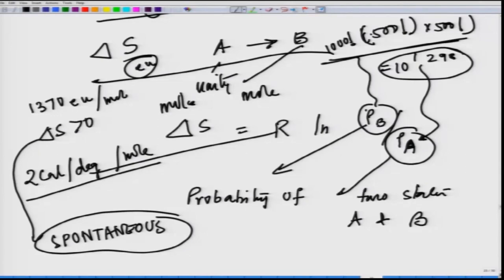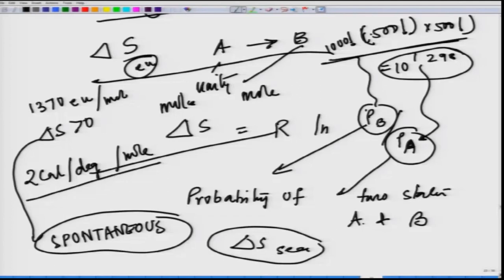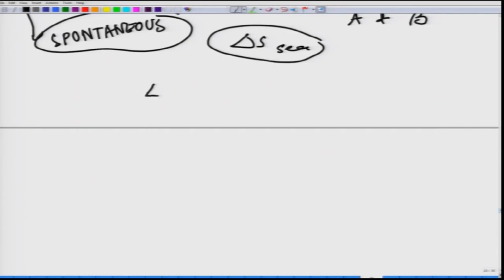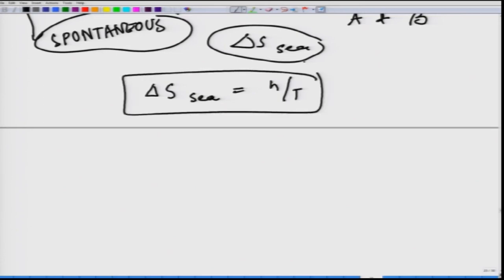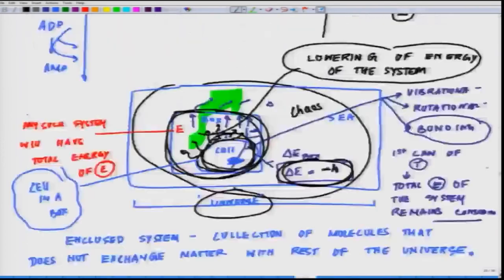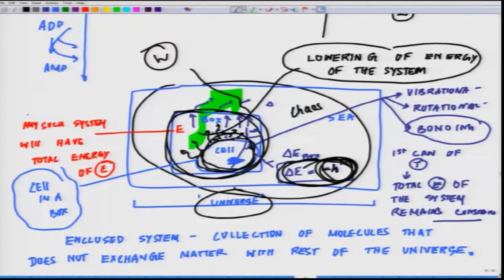The value of delta S for the surroundings, defined as delta S_C, is precisely equal to the amount of heat transferred to the surrounding from the system divided by the absolute temperature. So delta S_C equals H divided by T, where H is the heat transferred to the surrounding and T is the absolute temperature.